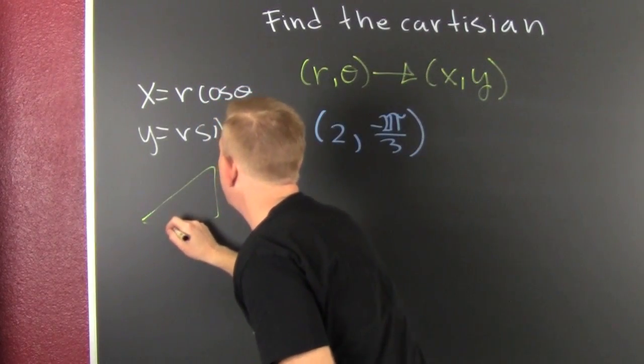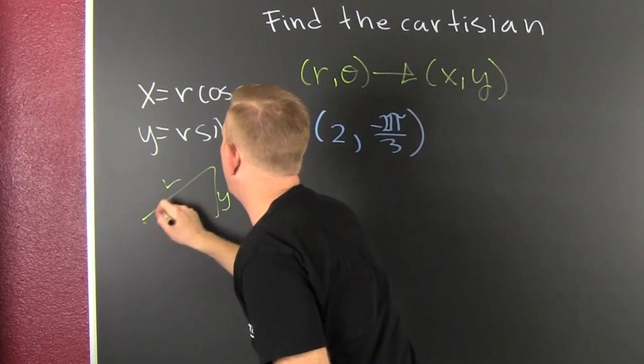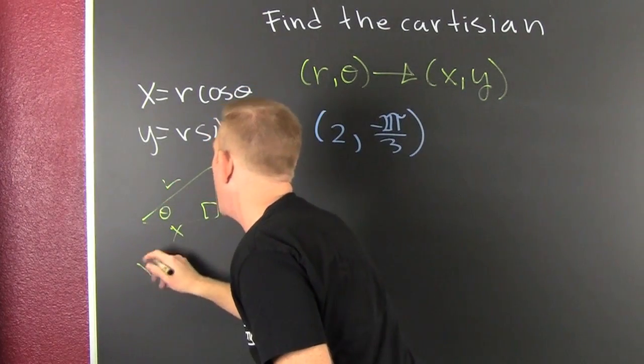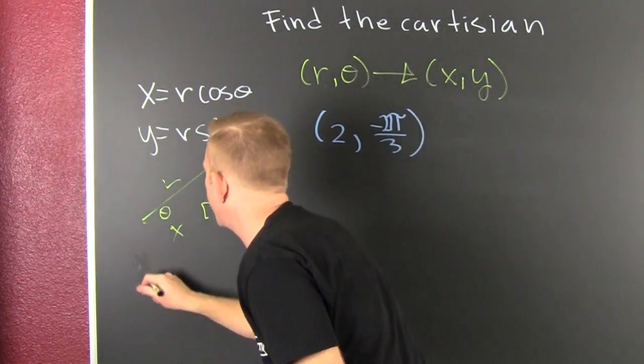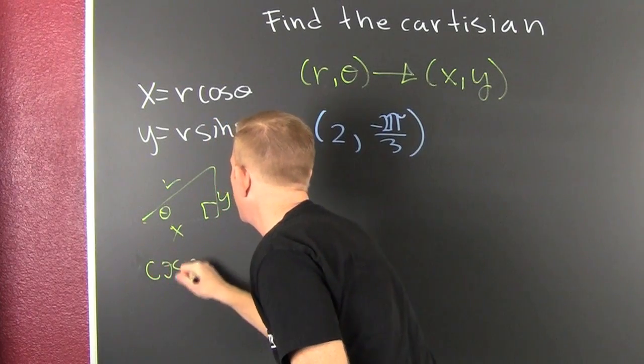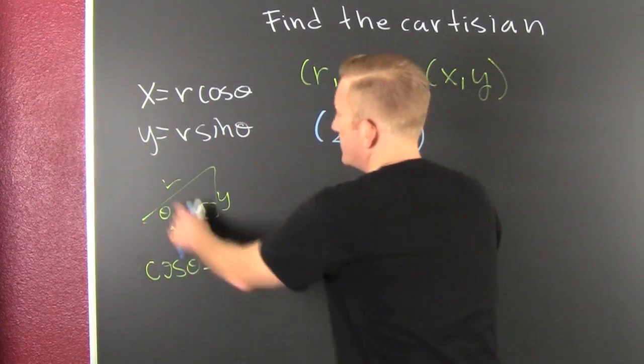This guy here: x equals r cosine theta. Where does that come from? Right triangle. This is x, this is y, this is r, that's theta. There's a relationship. The cosine of theta is equal to x over r.